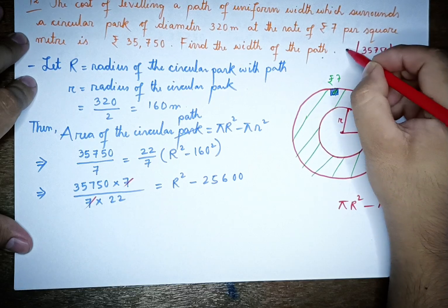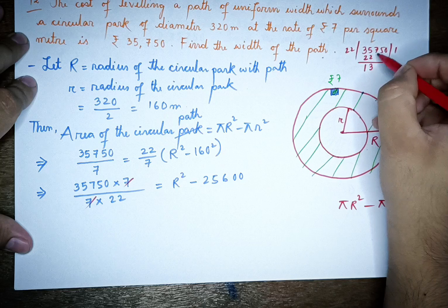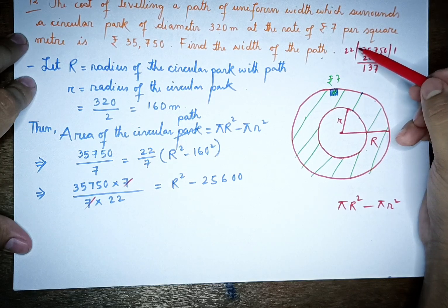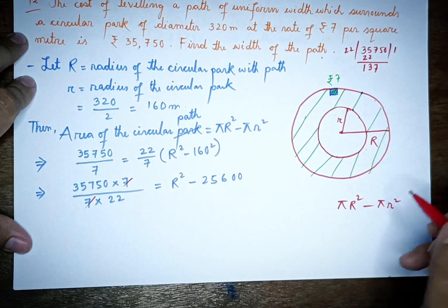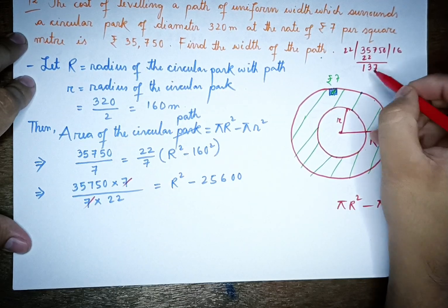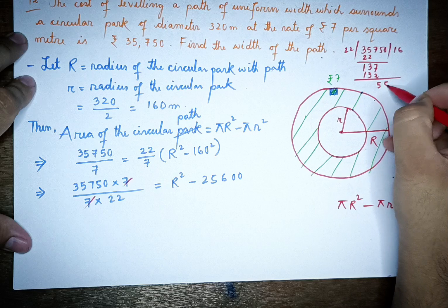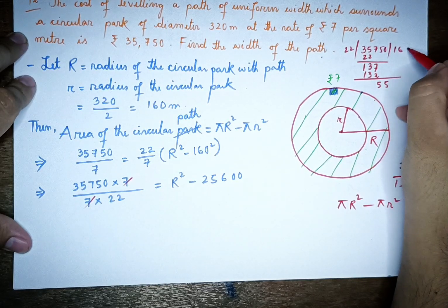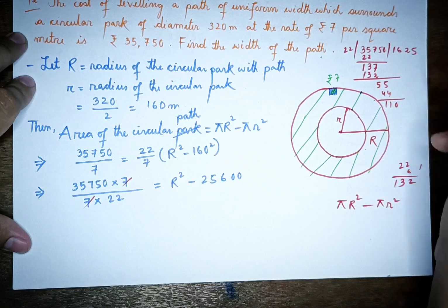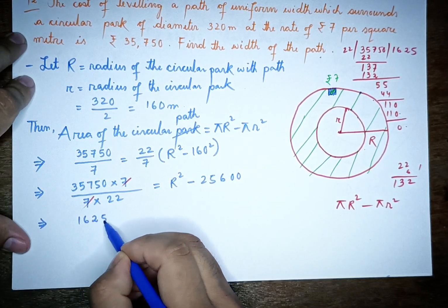Dividing 35,750 by 22: 35,750 ÷ 22 = 1,625. So R² − 25,600 = 1,625, which gives R² = 1,625 + 25,600 = 27,225.